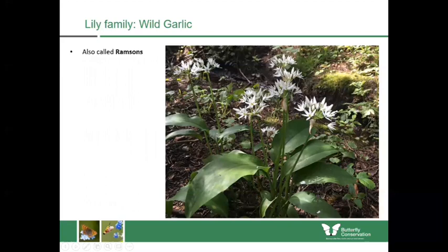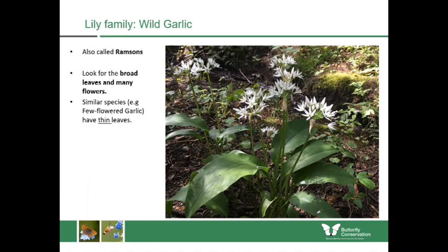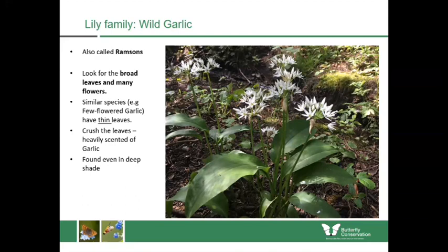Wild garlic, also known as ramsons, is within the lily family. To identify it, look for broad leaves with clusters of white flowers at the top. Similar species like few-flowered garlic have thin leaves — that's the easiest way to separate them. Crushing the leaves reveals a strong garlic scent. People can forage the leaves to make pestos or salads. You can find wild garlic even in deep shade within woodlands, and it flowers in early spring.